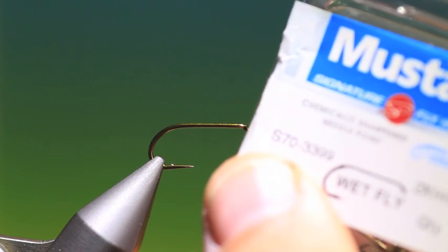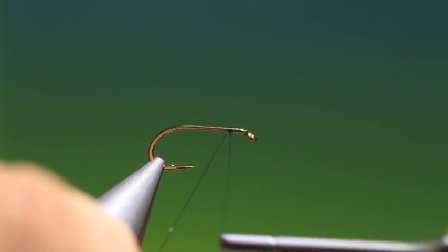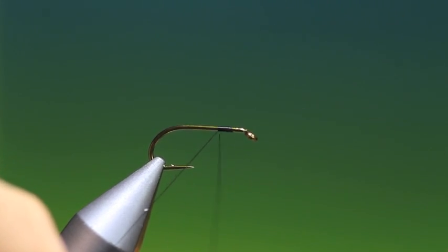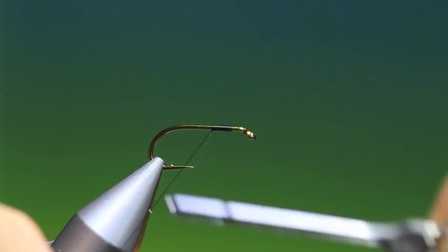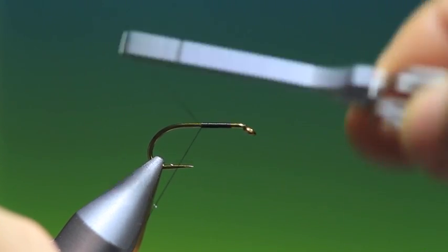Okay, let's start off with the Mustard X70. This is a size 10 wet fly hook, the Cocky Bondi. Now you may know that it's spelled with a U at the end and many people pronounce it Cocky Bondu, but I have been corrected many times by Welsh fly tying friends that it's pronounced Bondi not Bondu.